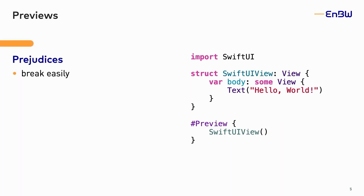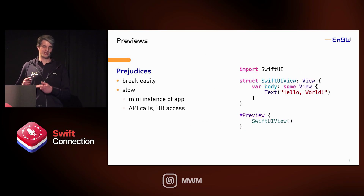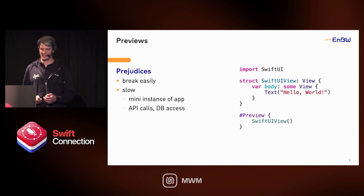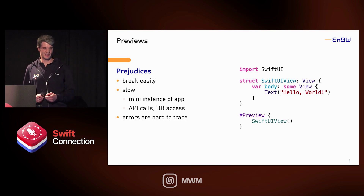They say previews break easily — for instance, when you add parameters to the view, you also need to update them in the preview. They say it's slow, they always reload and don't really show results because there are many instances of the app. And depending on how you set up the preview, they can even make API calls or database accesses. If you have errors in the preview, it's also hard to trace.